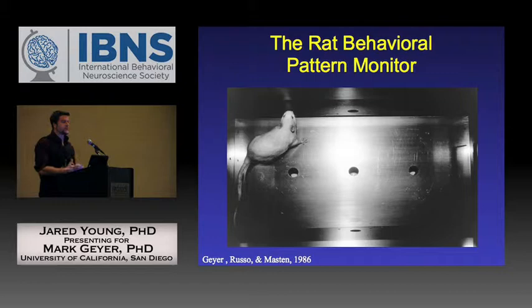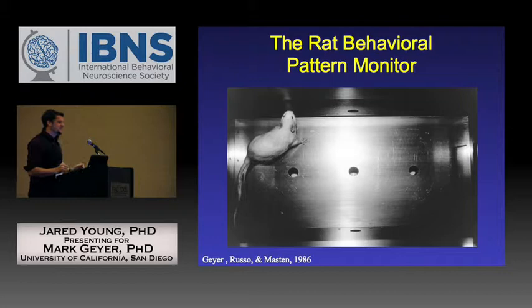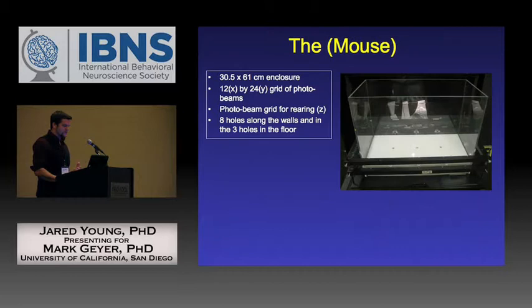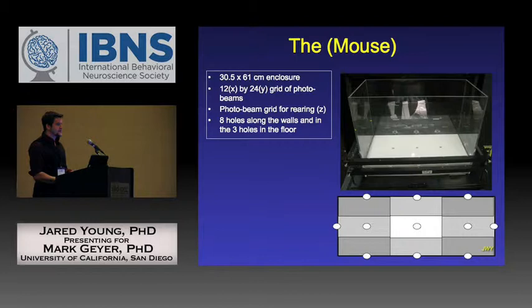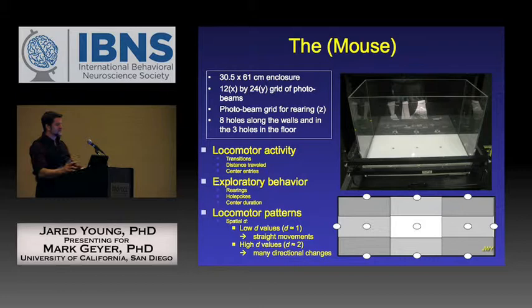Here is the rat behavioural pattern monitor — boxes built by Mark in his garage in 1978 that are still used today. A rodent can explore a chamber with hole pokes available for measuring specific exploration, plus rearing panels, generating a multitude of measures. The mouse version allows separation of the chamber into nine regions. Using XY coordinates, all measures fall into three factor categories: hyperactivity, specific exploration such as hole poking and rearing, and locomotor patterns, including spatial D.